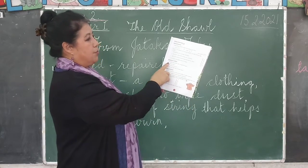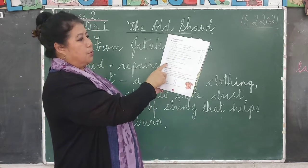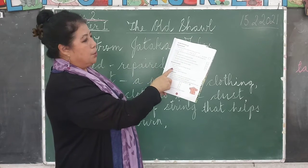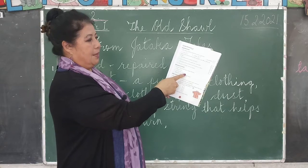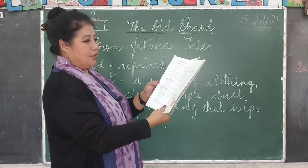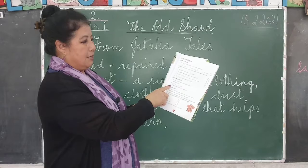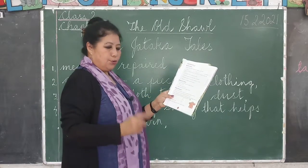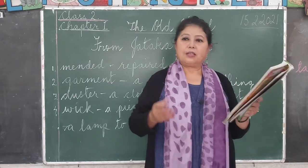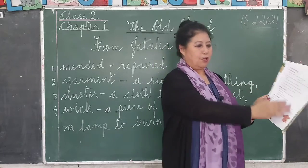Now, reference to context, number three: 'You have learned the true value of things. Well done.' Who says this? The teacher says this. To whom does he say it? He says it to the student. What does 'true value of things' mean? True value of things means not wasting things and using them properly. So this way you can do these exercises in your copy.